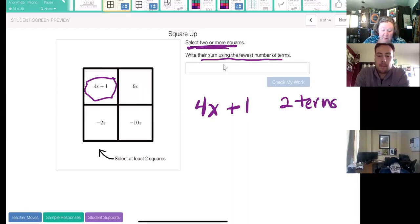We have 4x and we have 1, and we would say that this expression has two terms. Notice I use the word expression. It's an expression because it's made up of terms and it doesn't have an equal sign.